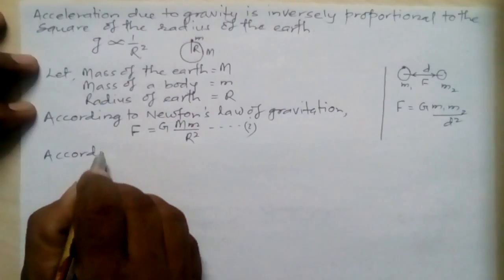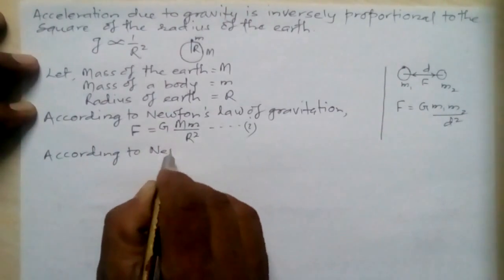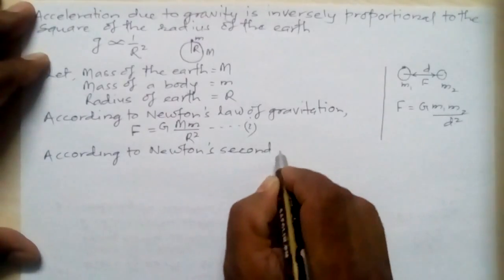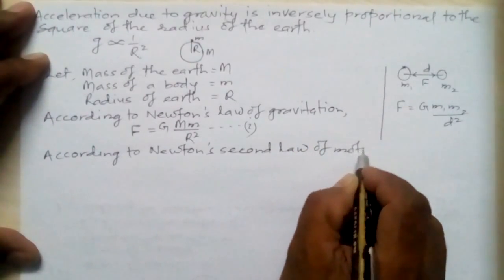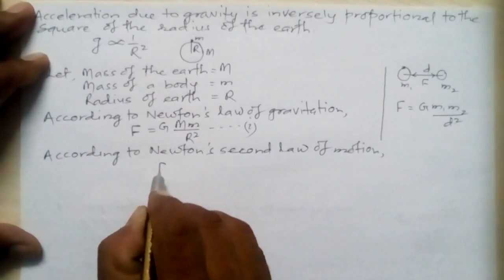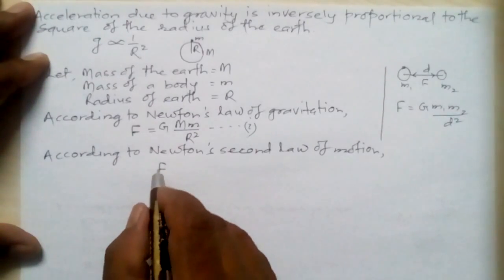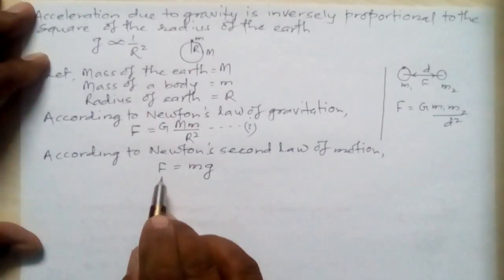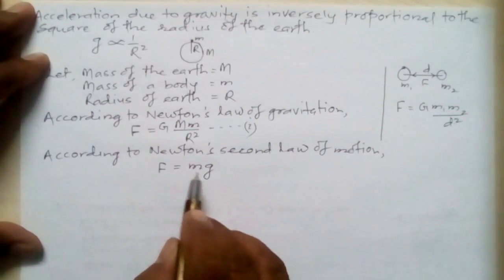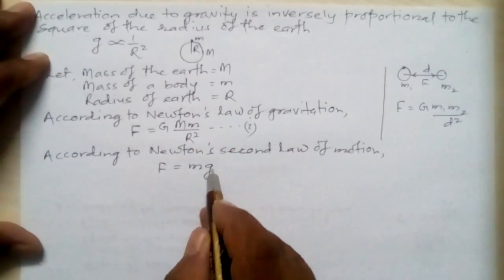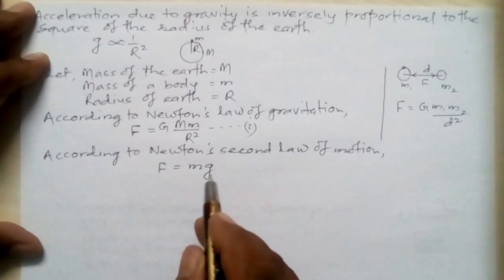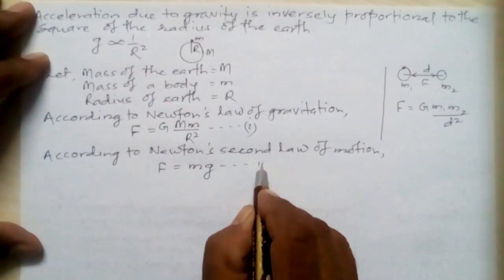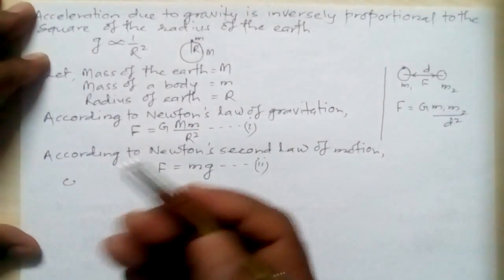According to Newton's second law of motion, we know that force F equals mass times acceleration. In this case, the gravitational force F equals mass m times acceleration due to gravity g. So instead of F = ma, we write F = mg, because this force is gravitational and the acceleration is acceleration due to gravity. This is equation number two.